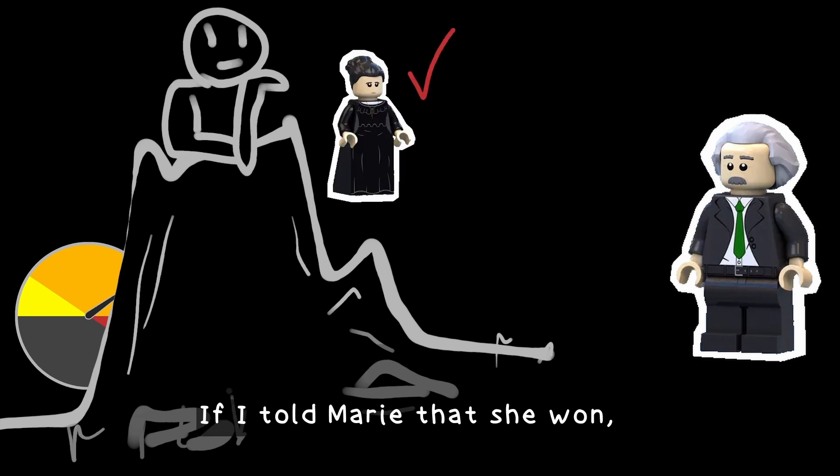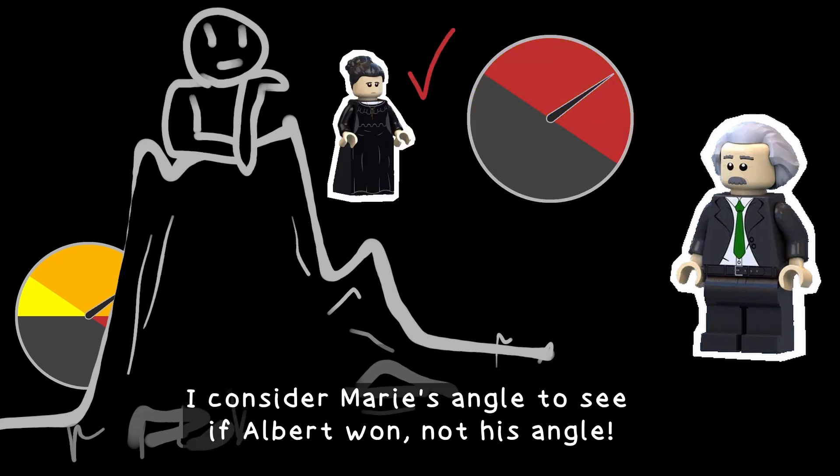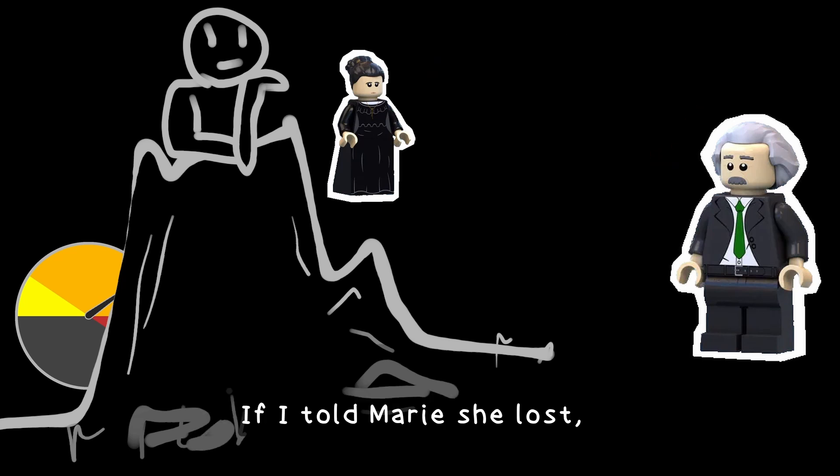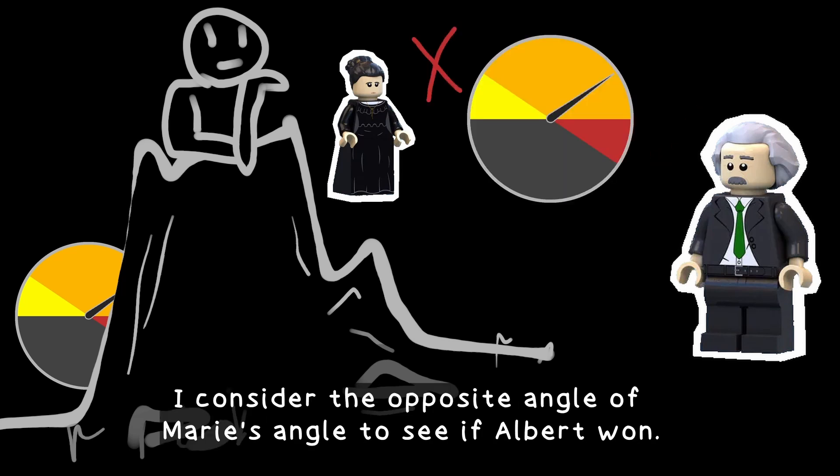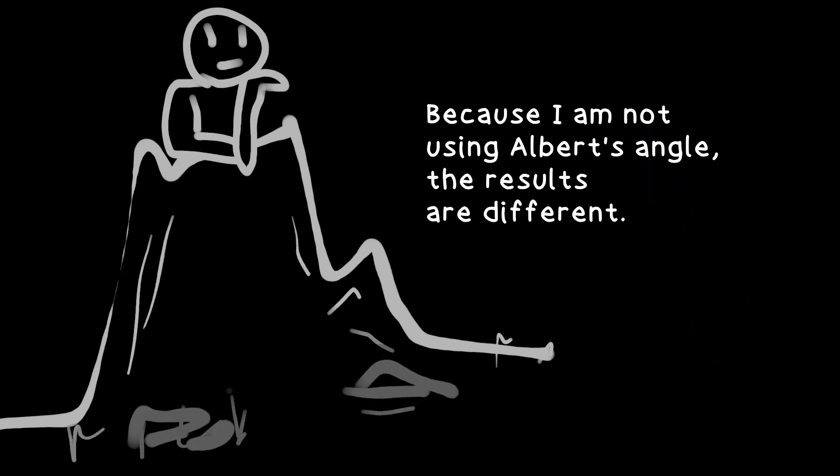If I told Marie that she won, I consider Marie's angle to see if Albert won, not his angle. If I told Marie she lost, I consider the opposite angle of Marie's angle to see if Albert won. Because I'm not using Albert's angle, the results are different.